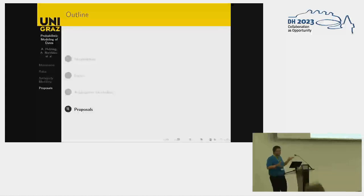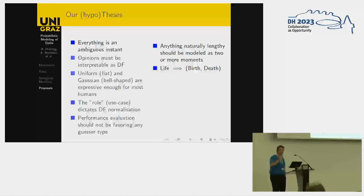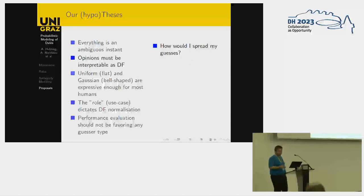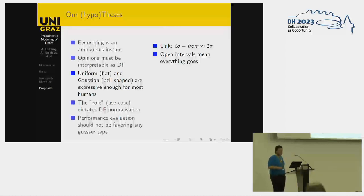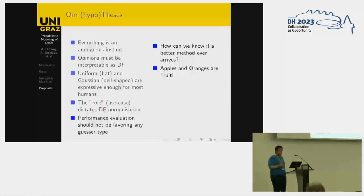Our proposals — and that's exactly where we would like pushback — is that everything is an ambiguous instance. Anything naturally lengthy should be modeled as two or more moments: a life is a birth and a death. So we keep intervals only for ambiguity. Opinions should be density functions, and uniform and Gaussian curves are enough to express most ambiguity. The role dictates the normalization.